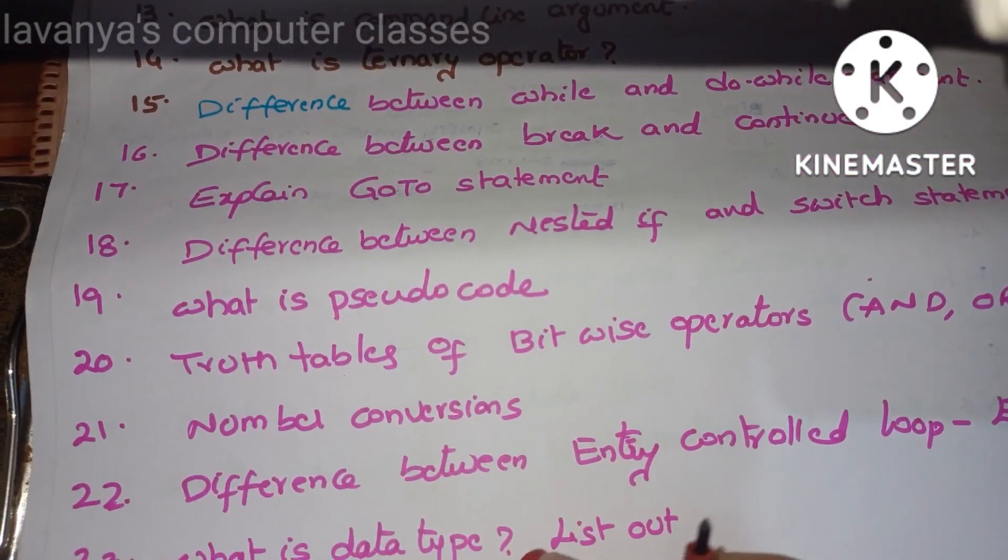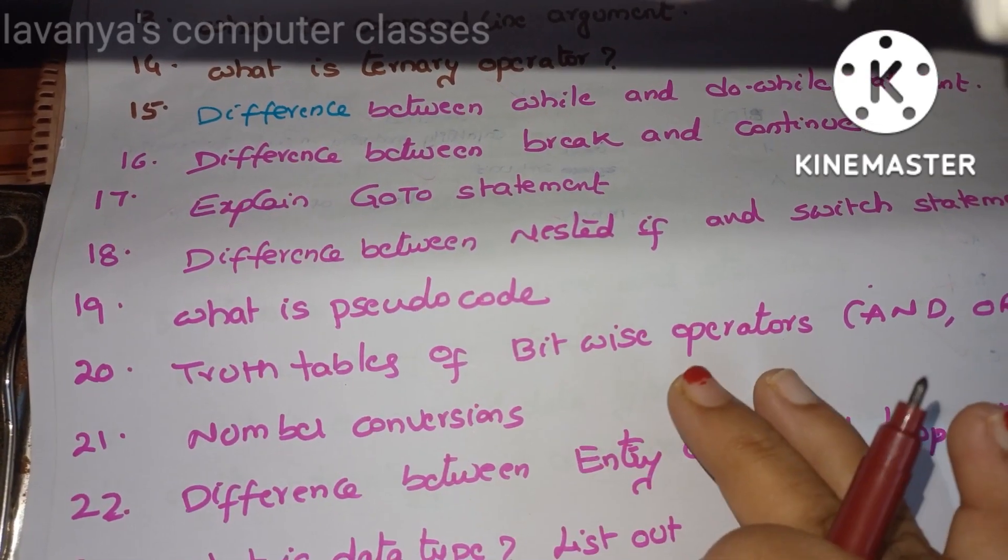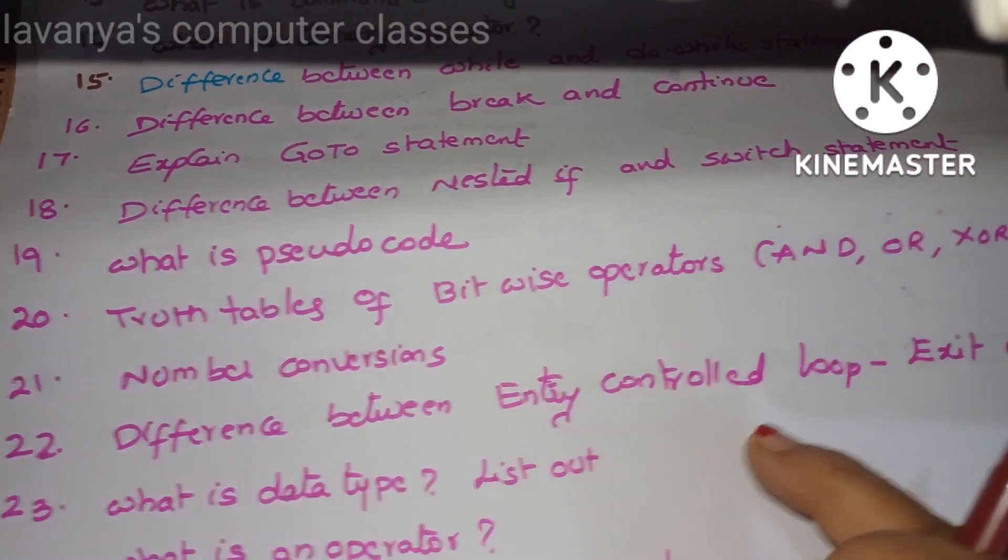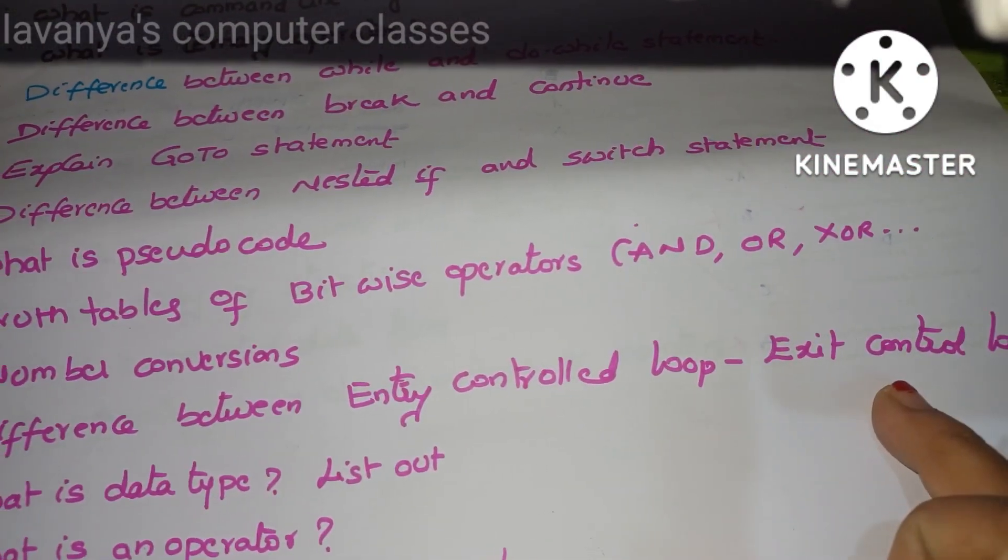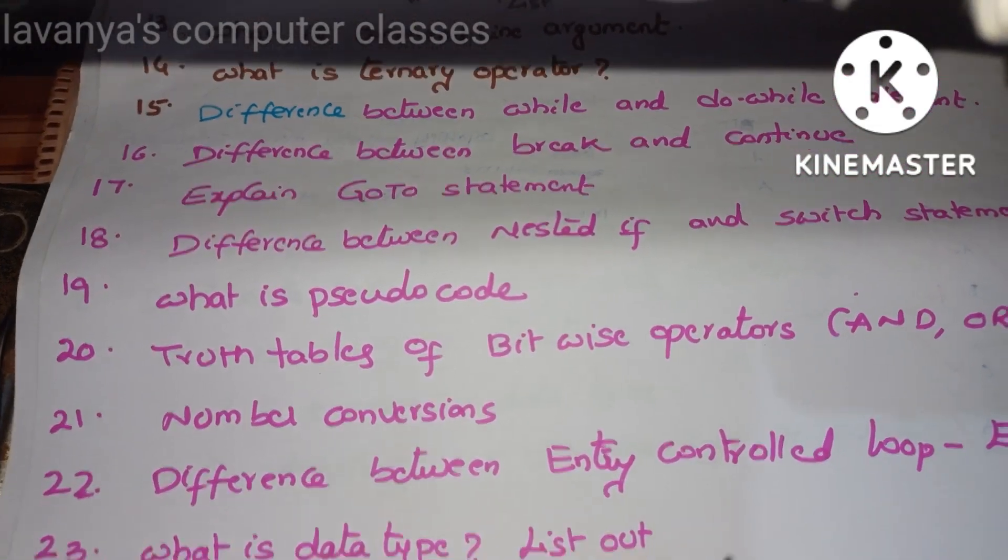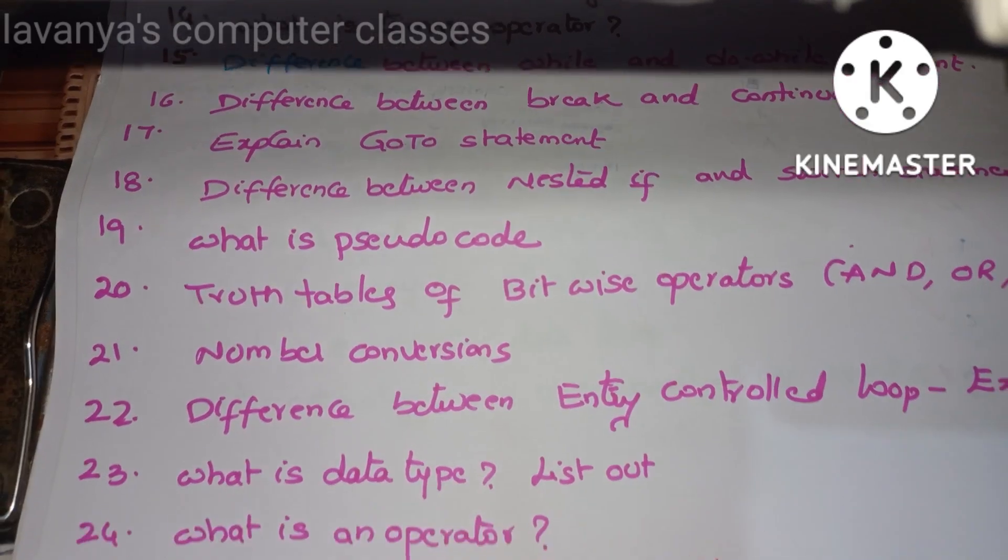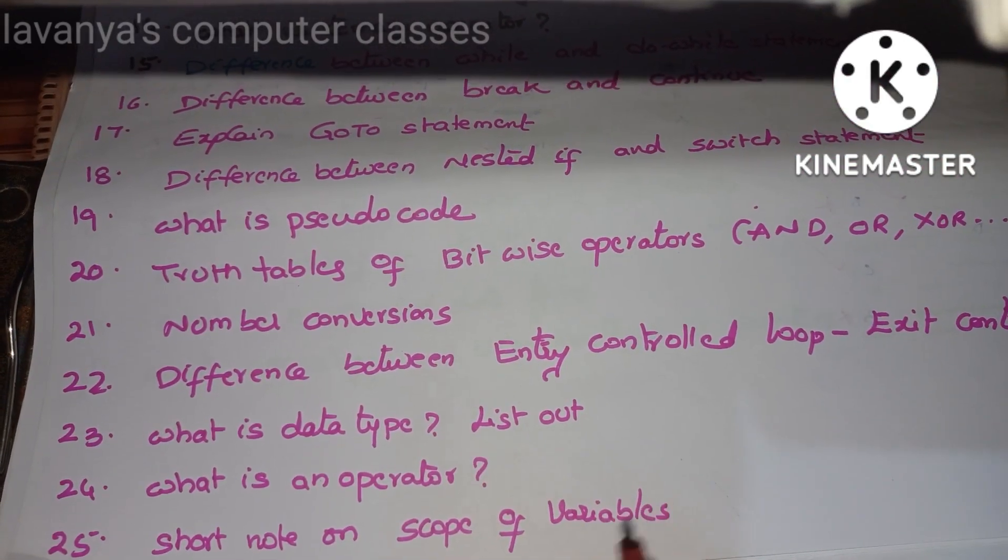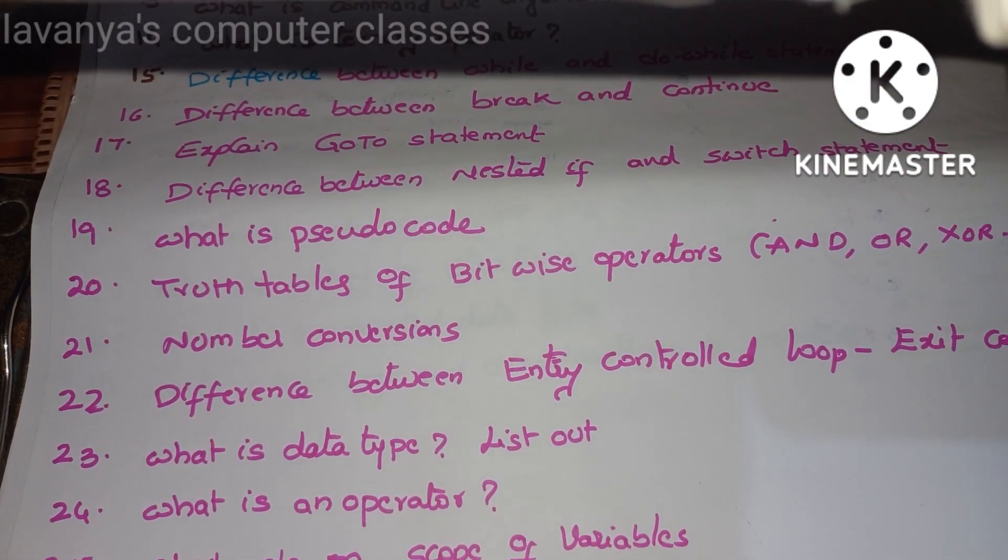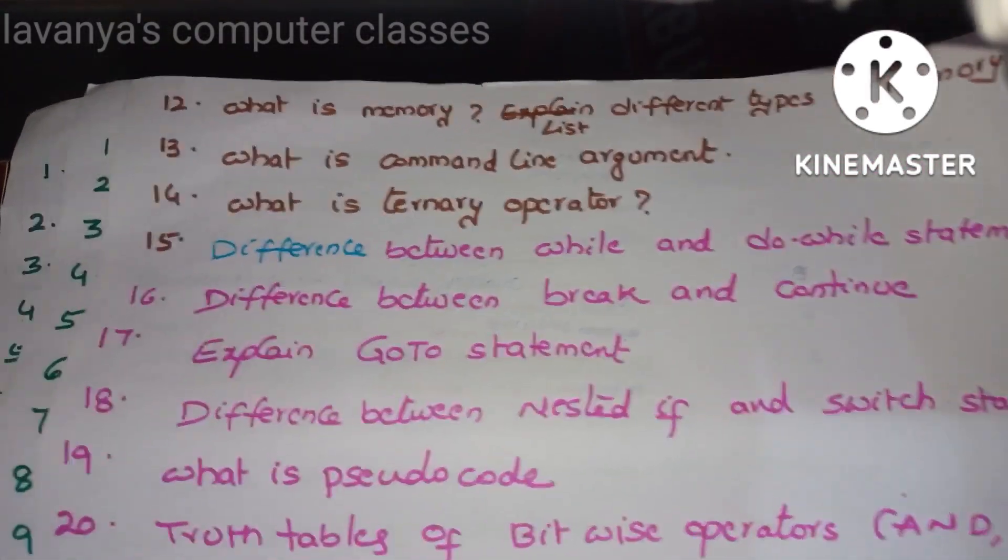Also, we go for bitwise shift operators with examples, numerical examples, and number conversions. Already said number conversions: binary to decimal, decimal to binary like that. Difference between entry control loop and exit control loop. That means for and while loops, do-while. What is data type? List out. What is an operator? Already gave that one. Write short notes on scope of variables. These are the short answer important questions in Unit 1.